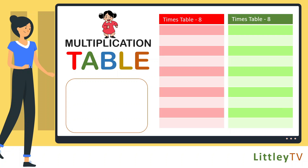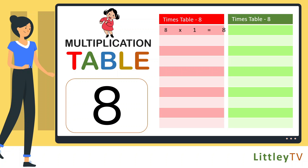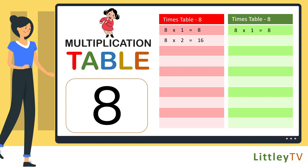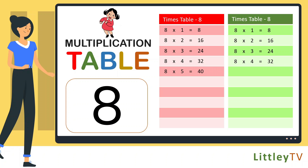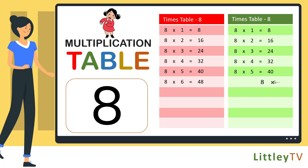Table of 8. 8 ones are 8, 8 twos are 16, 8 threes are 24, 8 fours are 32, 8 fives are 40, 8 sixes are 48.